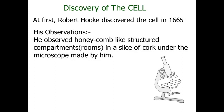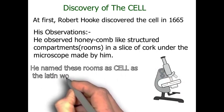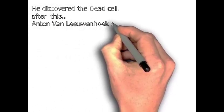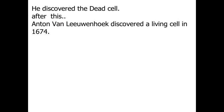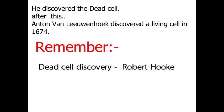He observed honeycomb-like structured compartments in a slice of cork — small room-like structures and compartments, similar to those found in a beehive. Cork is basically a woody structure in which he saw these compartments, and he named them 'cell' because the word 'cell' is derived from the Latin word 'cella', meaning 'room'. However, the cell he discovered was a dead cell. After this, Anton van Leeuwenhoek discovered a living cell in 1674. To remember: dead cell discovery — Robert Hooke; living cell discovery — Anton van Leeuwenhoek.